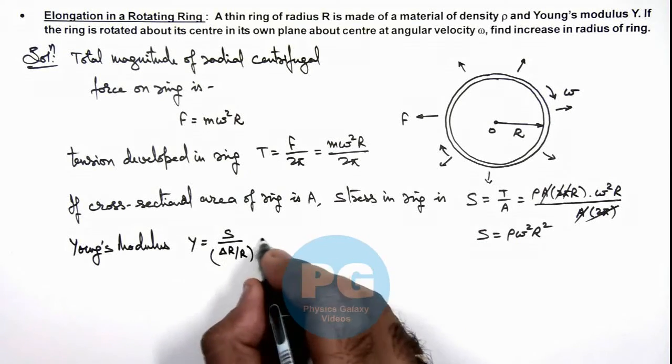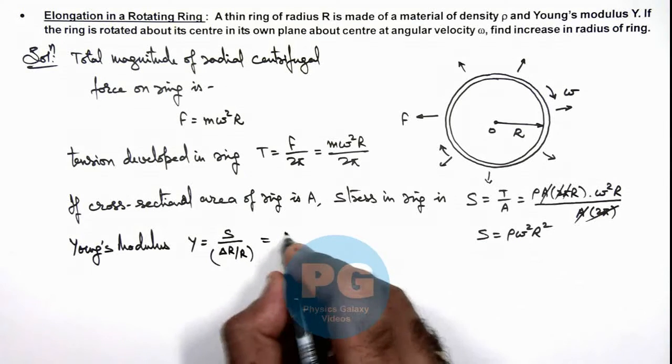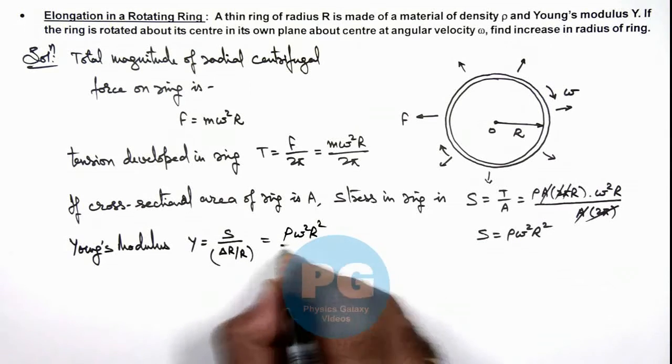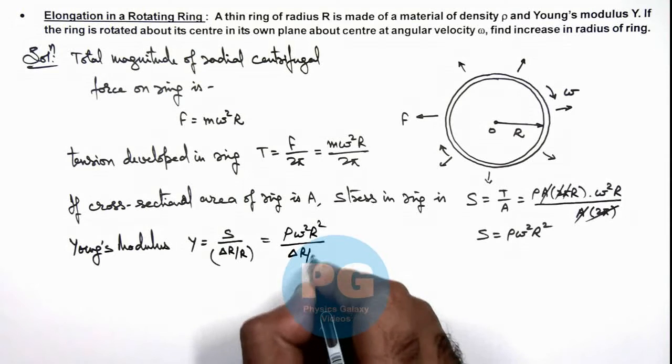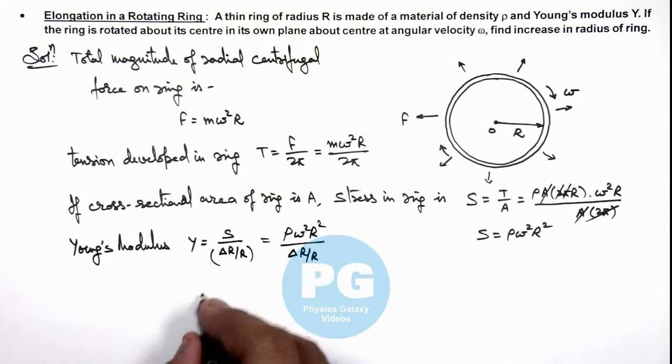So on substituting the values, the stress we are having is ρ ω² R² divided by ΔR / R. So this gives us the value of increase in radius of ring.